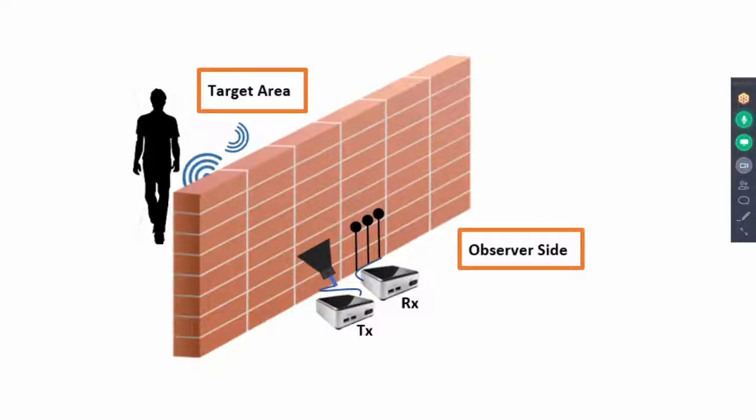This illustration shows our experimental setup. Here we can see a target moving behind the wall. Two wireless devices are placed on one side of the wall. One device acts as a transmitter and the other as a receiver.